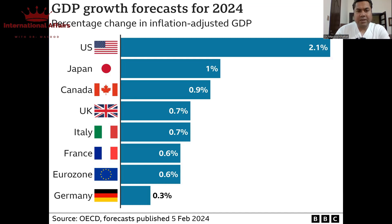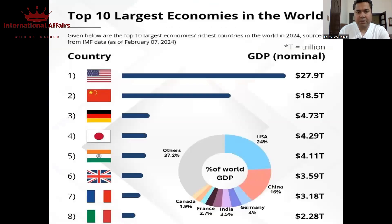Now let's understand the United States of America's economy. America is the leading economy in the world. Their economic growth is fragile at 2.1% in 2024, but still they are the leading economy in the world. America's economy is $27.9 trillion in 2024. China is also the second largest economy and growing rapidly, and soon they are going to surpass the U.S. economy in the next decade.